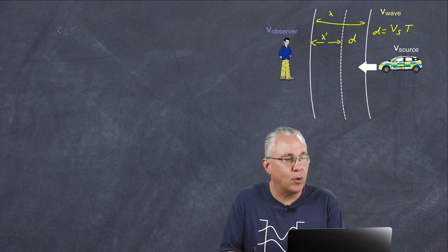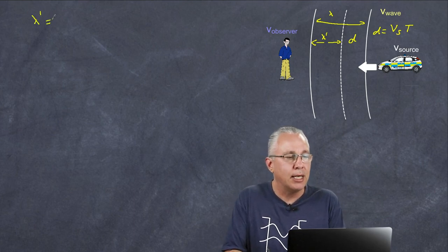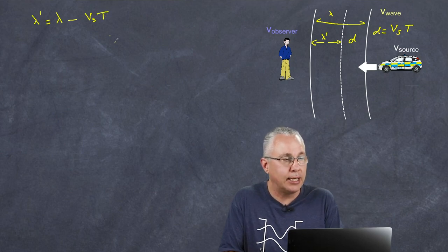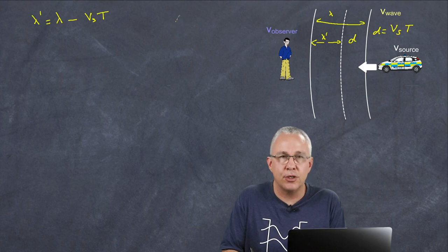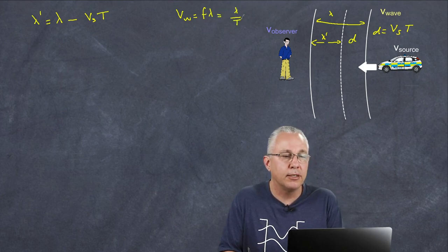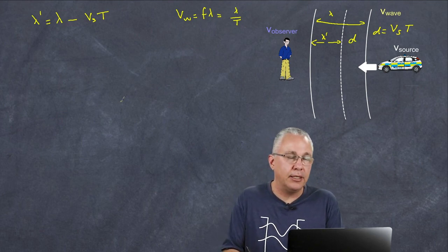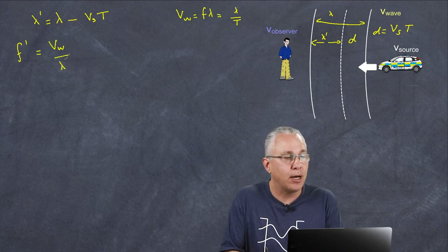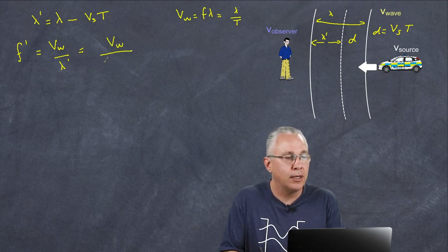The perceived wavelength that the observer picks up is equal to the original wavelength of our wave minus that distance — the velocity of the source multiplied by T. Your understanding of wave equations is really important here. You should know that the velocity of any wave is simply equal to F·lambda, but it can also be written as lambda over T. We're interested in the frequency, so we want the perceived frequency — that's equal to the velocity of the wave divided by the perceived lambda. So we have the velocity of the wave over lambda minus velocity of the source multiplied by T.